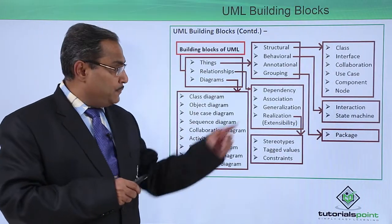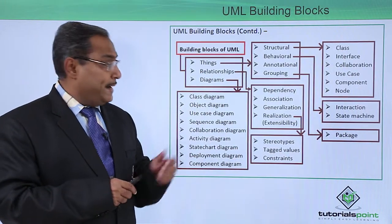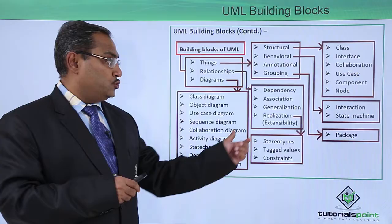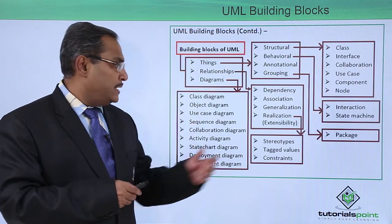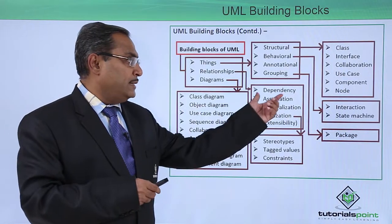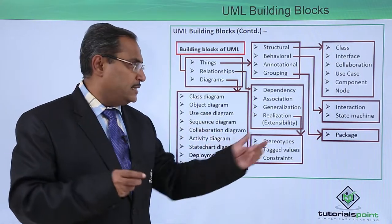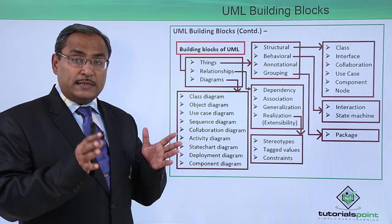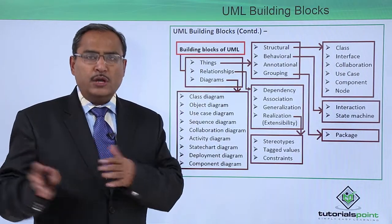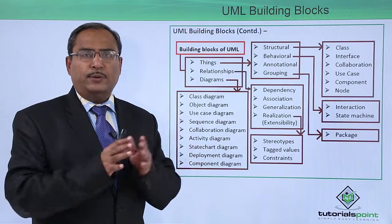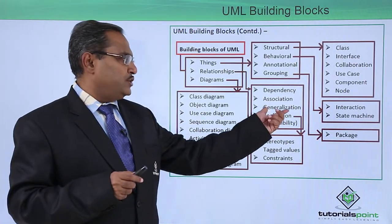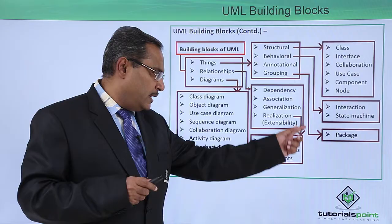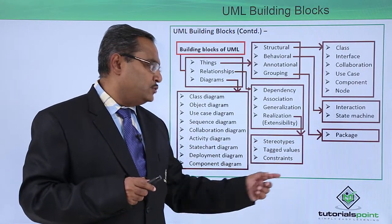Now let us come to relationships. The relationships in UML are: dependency, association, generalization, and realization. Generalization is essentially inheritance, and realization means extensibility. We have dependency between two classes or objects, and association — for example, an association between a house and a person. Realization can also be known as extensibility and can be of stereotypes, tagged values, and constraints.